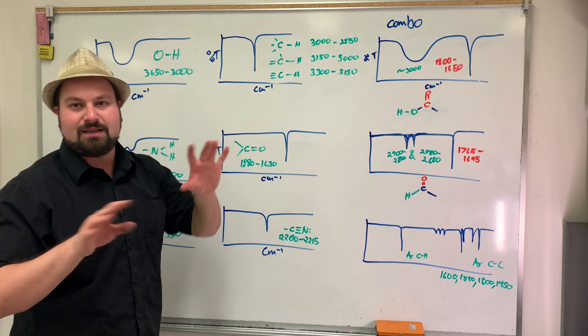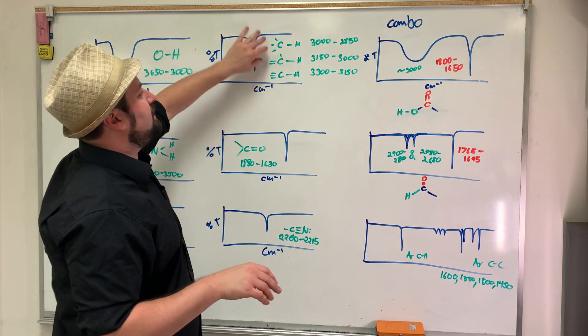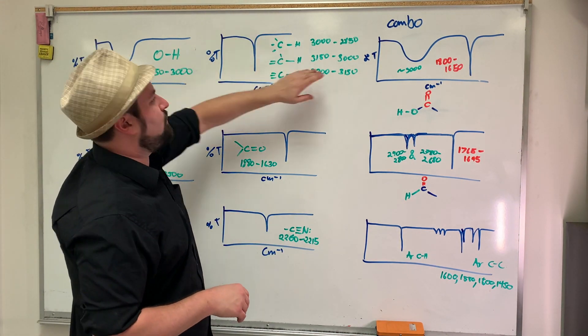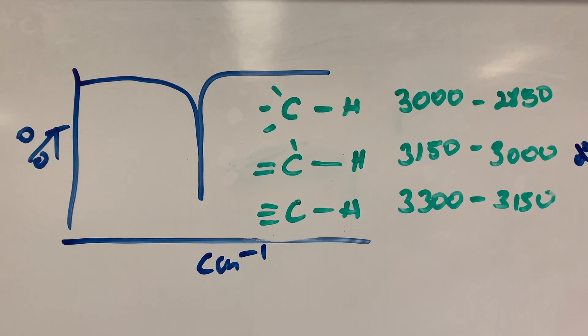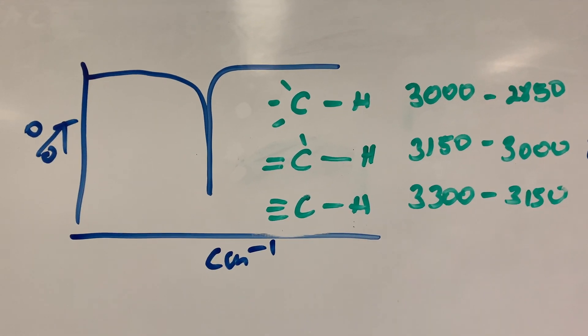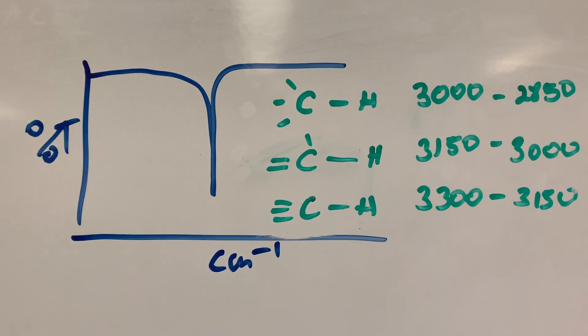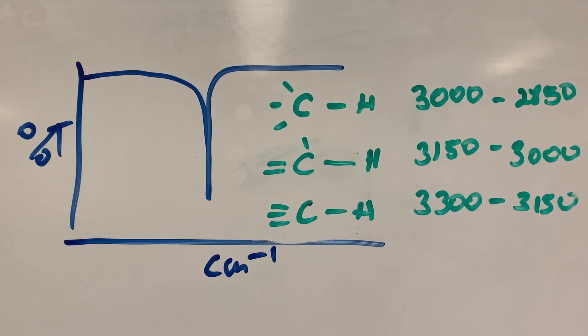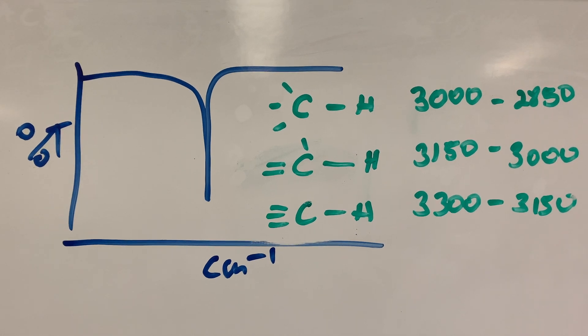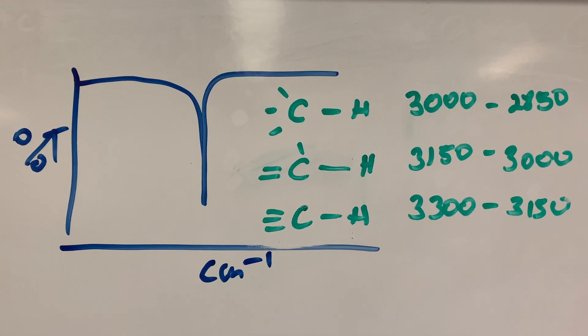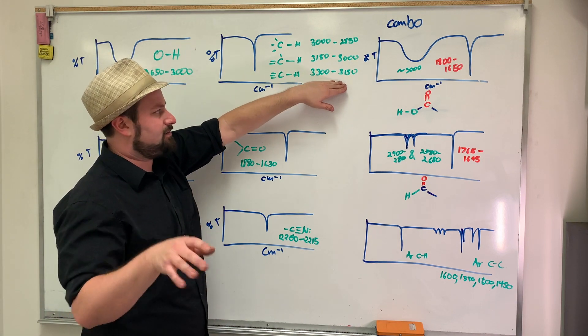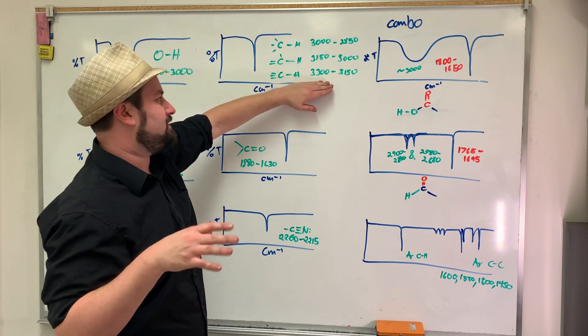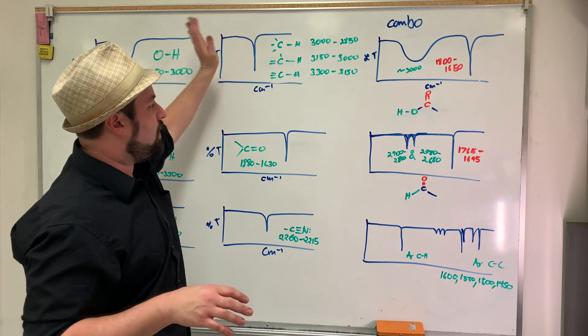Then for all the different kinds of CH bonds, you have single-bonded CHs which are going to be quite low. You can have multiple of any of these on a single molecule. For single-bonded, it's below 3000. For double-bonded, it's between 3000 and 3150. And for triple-bond, that's going to be between 3150 and 3300. All these are sharp.